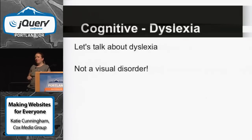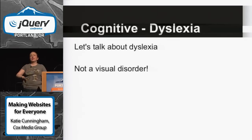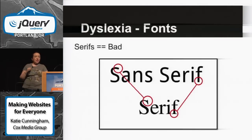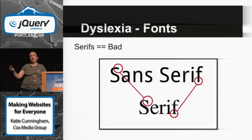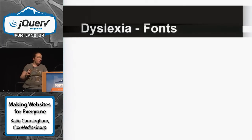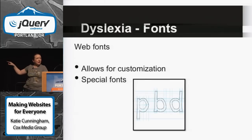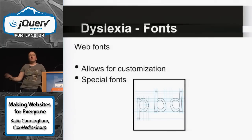Let's talk about dyslexia — this is not a visual disorder. It's not just the 'mirror text thing' where they see things in reverse. It's actually an information processing disorder. One thing to avoid is serifs — those little fangling things on letters. You can still use serifs in headers or sparingly, but for body text you want to use sans serif. There are also special fonts designed for people with dyslexia. Let as much of the text on your website as possible be overwritable by the user.